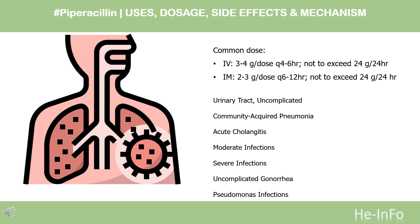IM dosage: 2–3 g/dose every 6–12 hours, not to exceed 24 g/24 hours. Urinary tract infection (uncomplicated): 6–8 g/day IV or IM; 100–125 mg/kg/day divided every 6–12 hours.